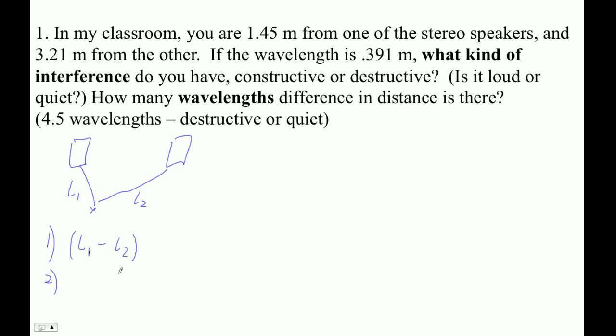Step two, divide by the wavelength. So what you're going to get is how many waves difference. And if it's something point zero, then it's constructive interference. And if it's something point five, then it's destructive interference. That's the way this works.